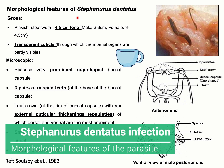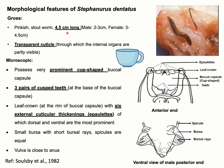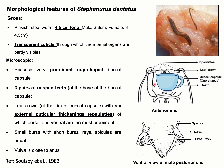Regarding morphological features of Stefanurus dentatus or pig kidney worm: grossly the parasite is pinkish in color. The size is around 4.5 centimeters in length, which is slightly smaller than Metastrongylus apri, which is around 6 centimeters. The cuticle of Stefanurus dentatus is very transparent, through which internal organs can be seen. Microscopically, as this parasite is under superfamily Strongyloidea, it has a prominent buccal capsule.